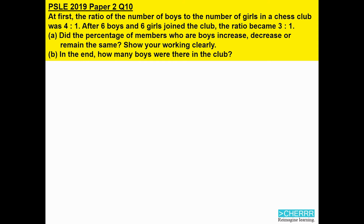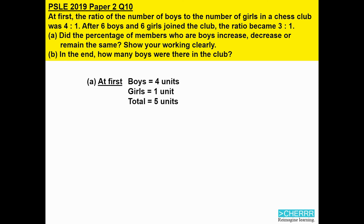To solve for the percentage change, we do not need actual numbers — all we need is the comparison between boys and girls. We know that at first there is a ratio of 4 to 1, so we can call it boys: 4 units and girls: 1 unit. That gives us a total of 5 units. Using the fraction boys over total, multiplied by 100%, the percentage of boys is 80%.